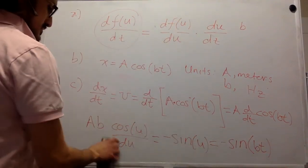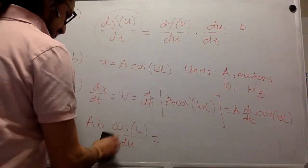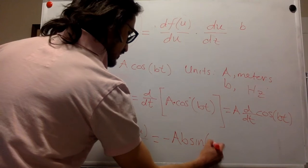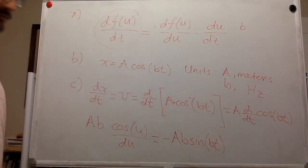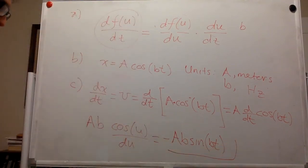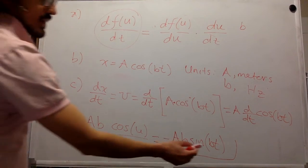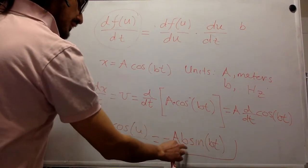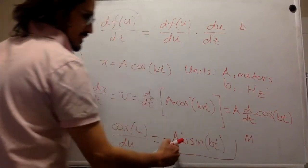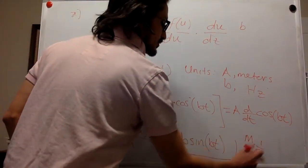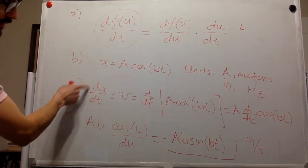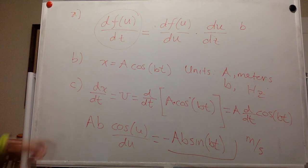So putting everything together, this is minus A B sine of Bt. This is the end result. And here the units of the argument are still unitless, second and one over second. But over here we have A has units of meters and B one over second. So that means the units are meters per second, which is what you would expect for a velocity. And so we have shown that using the chain rule, you get the right units.